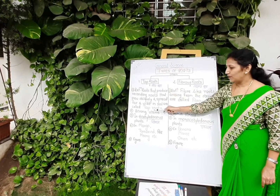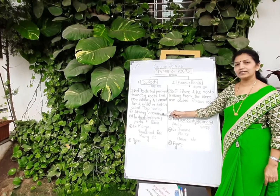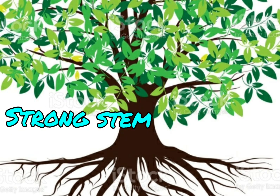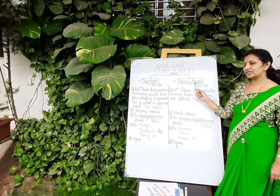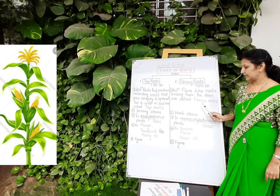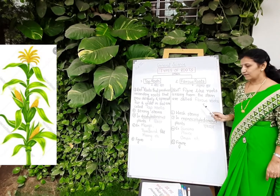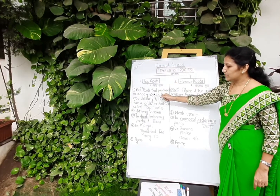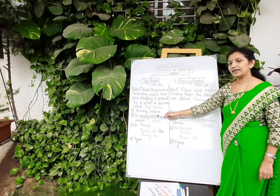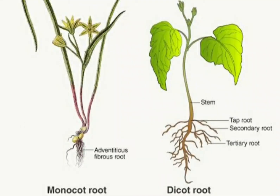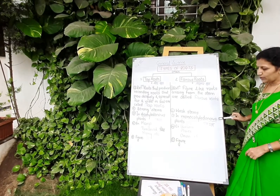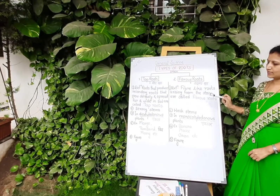Plants that have tap roots have strong stems, and plants that have fibrous roots have weak stems. Tap roots are present in dicotyledonous plants, and fibrous roots are present in monocotyledonous plants.